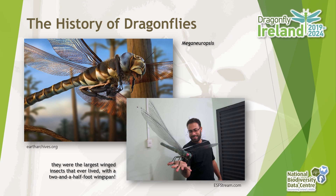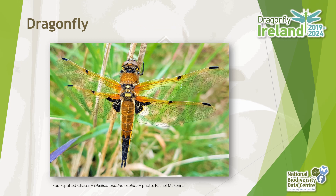Count yourselves lucky that you're not being asked to do dragonfly and damselfly surveys 300 million years ago, because those ancient dragonfly ancestors included the largest insects that ever flew. Meganeuropsis had a wingspan that measured some two and a half feet across — you'd need quite a big net to catch that one.